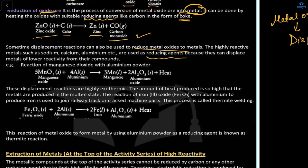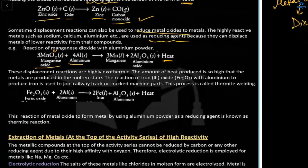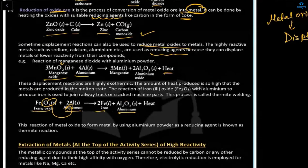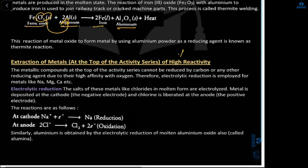The displacement method uses highly reactive metals such as sodium, calcium, or aluminium as reducing agents because they can displace metals of lower reactivity. For example: manganese oxide (MnO2) + aluminium → manganese + aluminium oxide, with heat evolved. Another example: Fe2O3 + Al → iron + aluminium oxide. The oxygen displaces from one metal to combine with the more reactive aluminium.